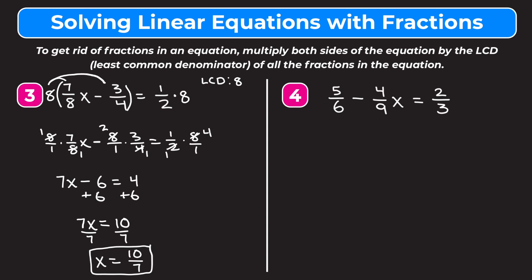Finally, taking a look at our last example, we have 5/6 minus 4/9x equals 2/3. Again we have three fractions, so we need to multiply by the least common denominator of all three. That's going to be the least common multiple of 6, 9, and 3, which is 18. So we want to multiply both sides of our equation by 18.